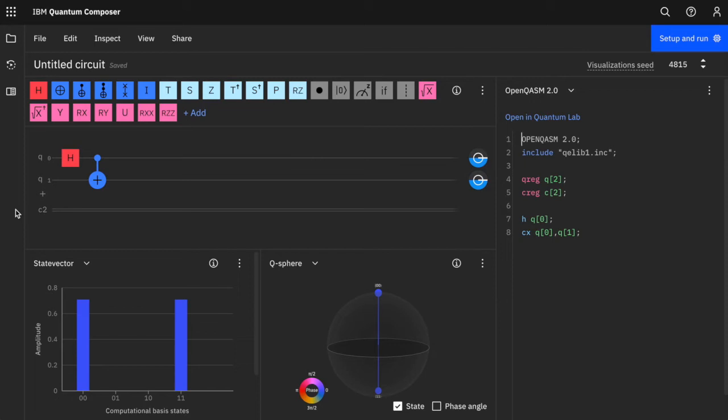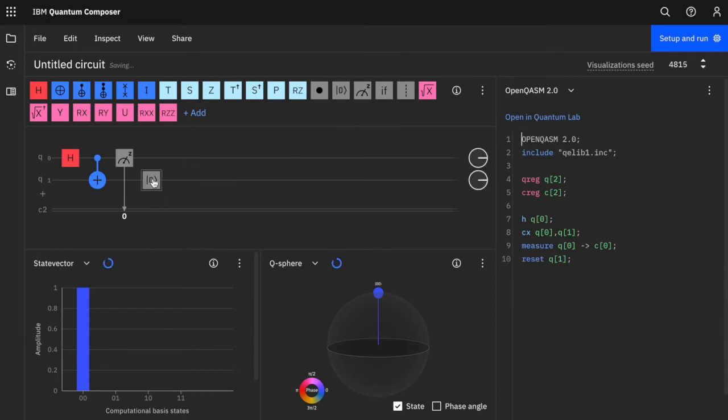So now we need to measure our qubits. So let's grab the measure gate and apply it to qubit 0. And we'll take a measure gate and we'll apply it to qubit 1. Oops, that was the wrong gate. That's a reset gate. So let's delete that. And let's grab the right gate this time and apply the measure gate to qubit 1.